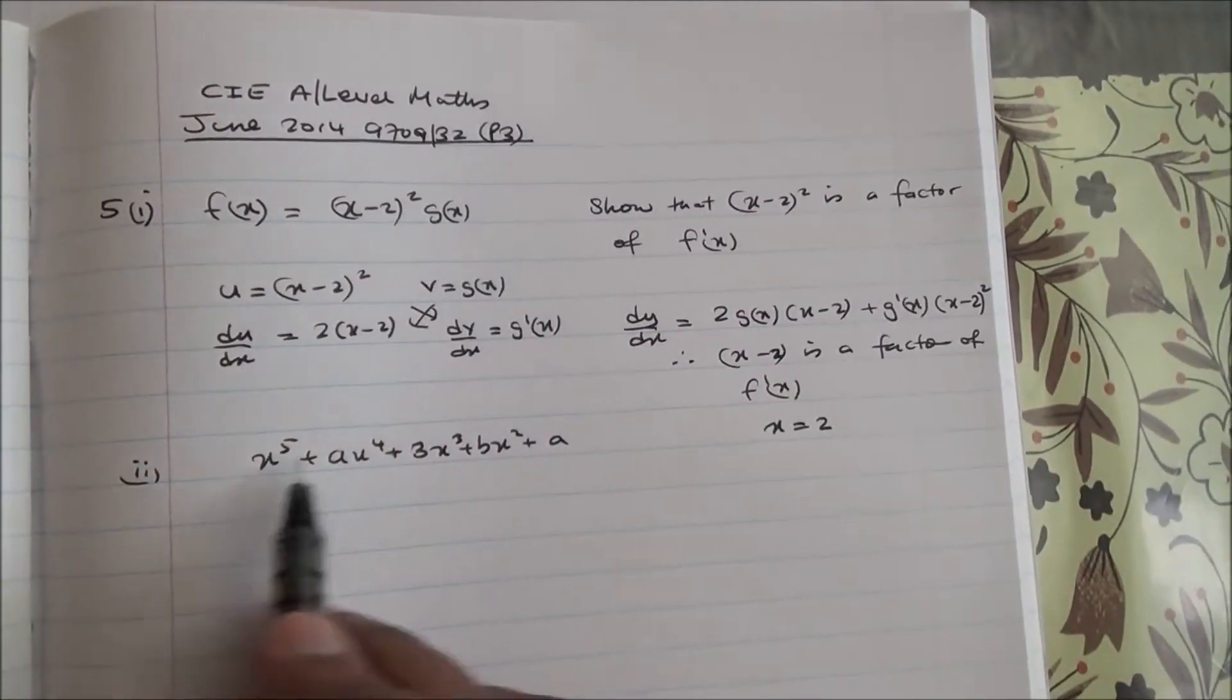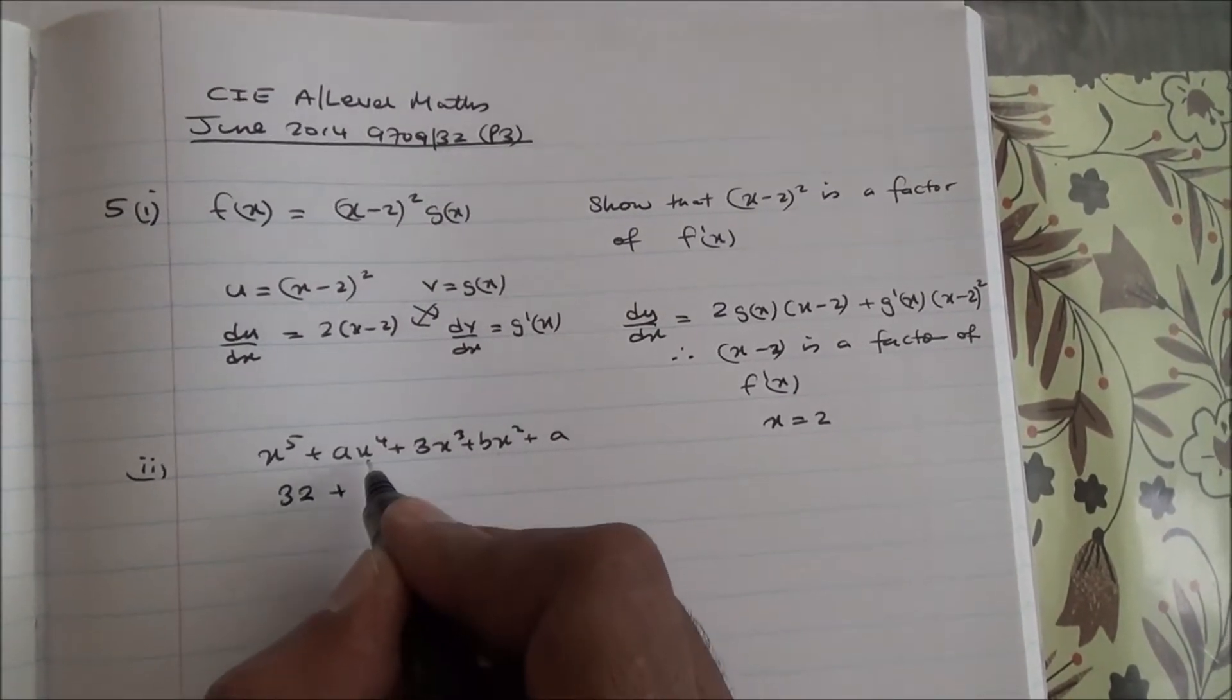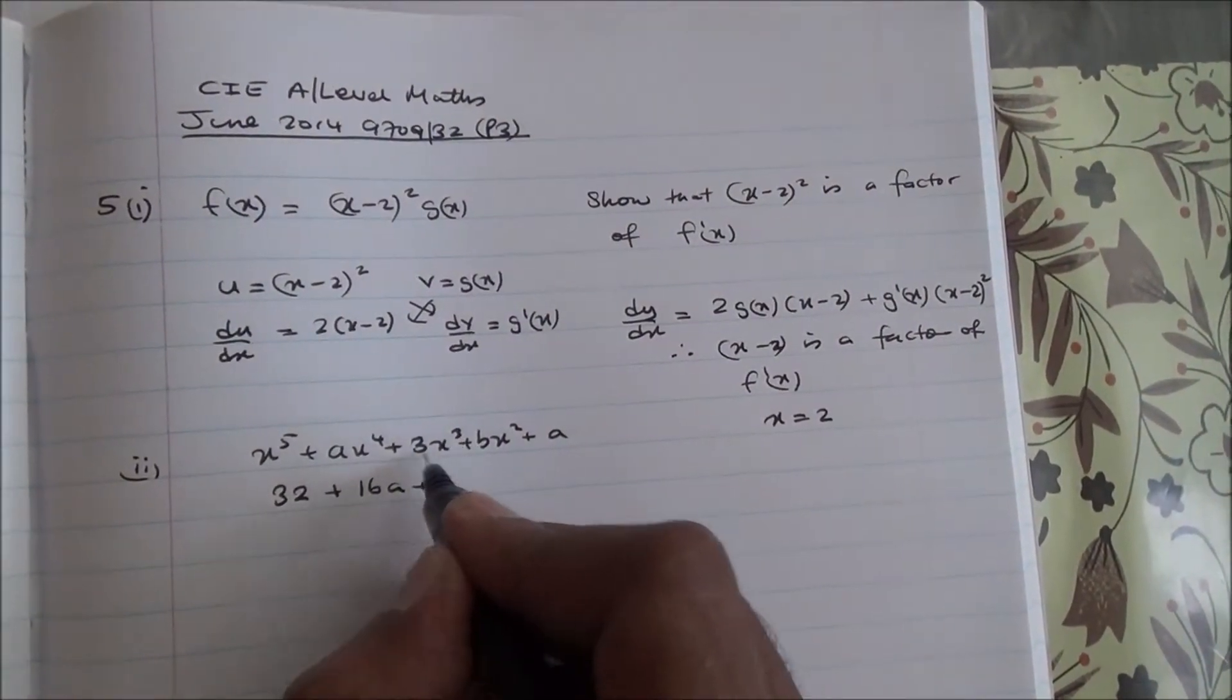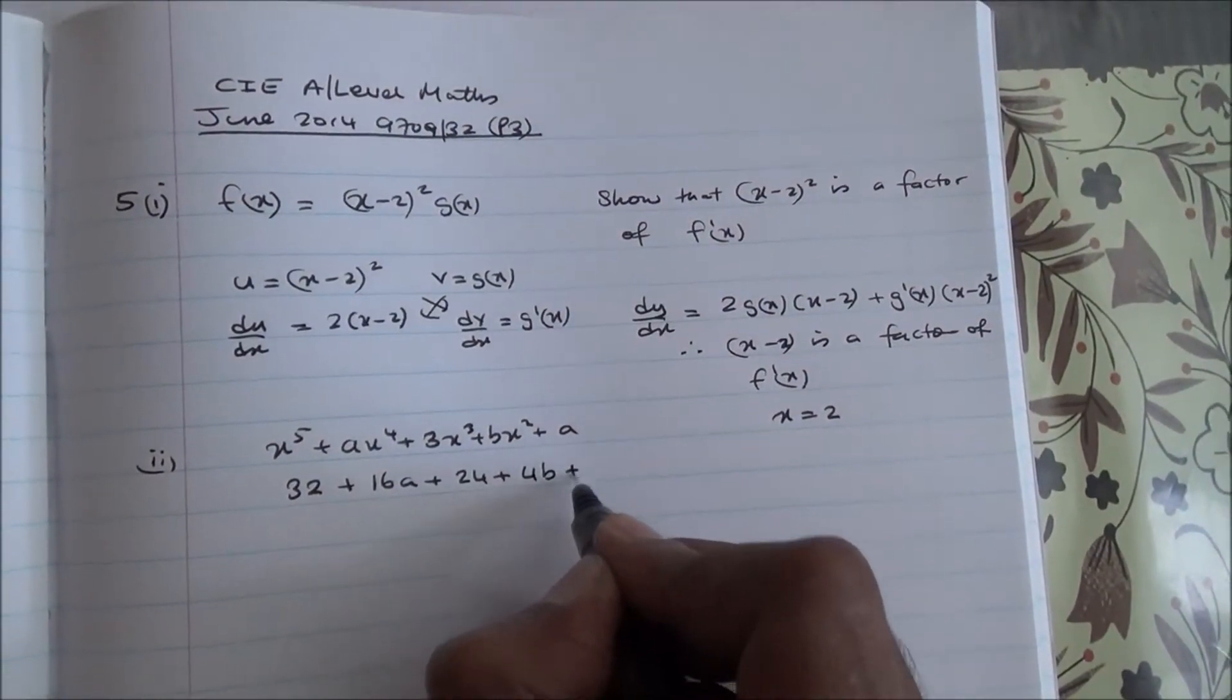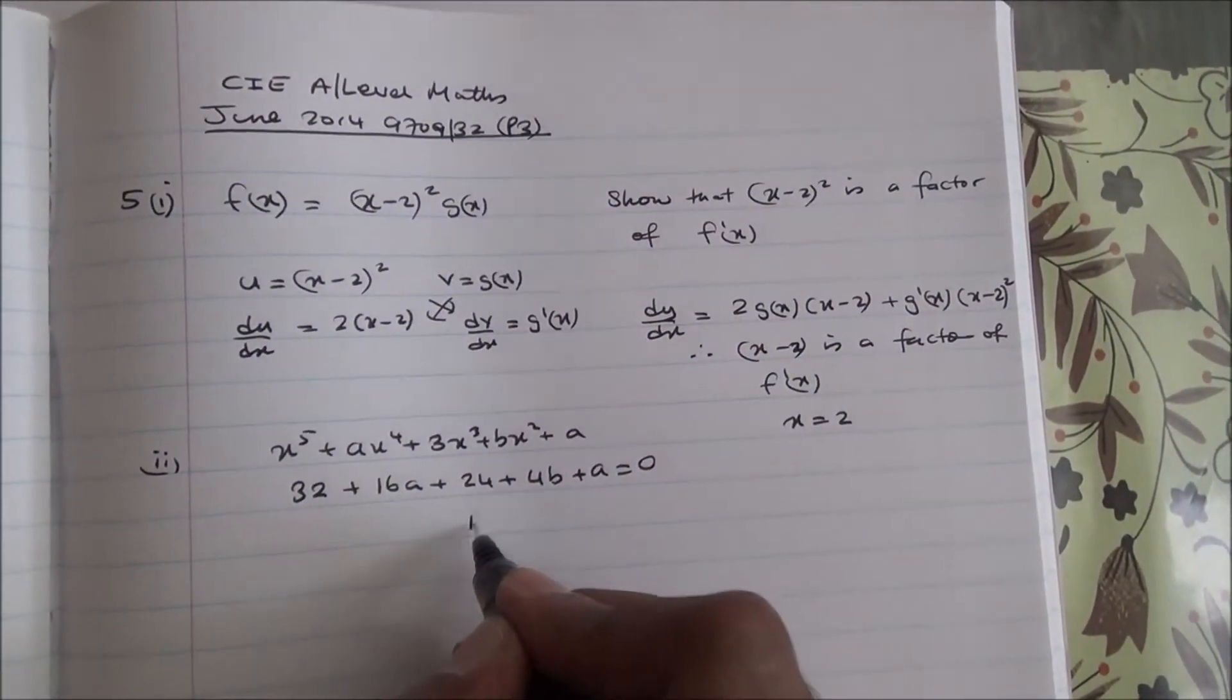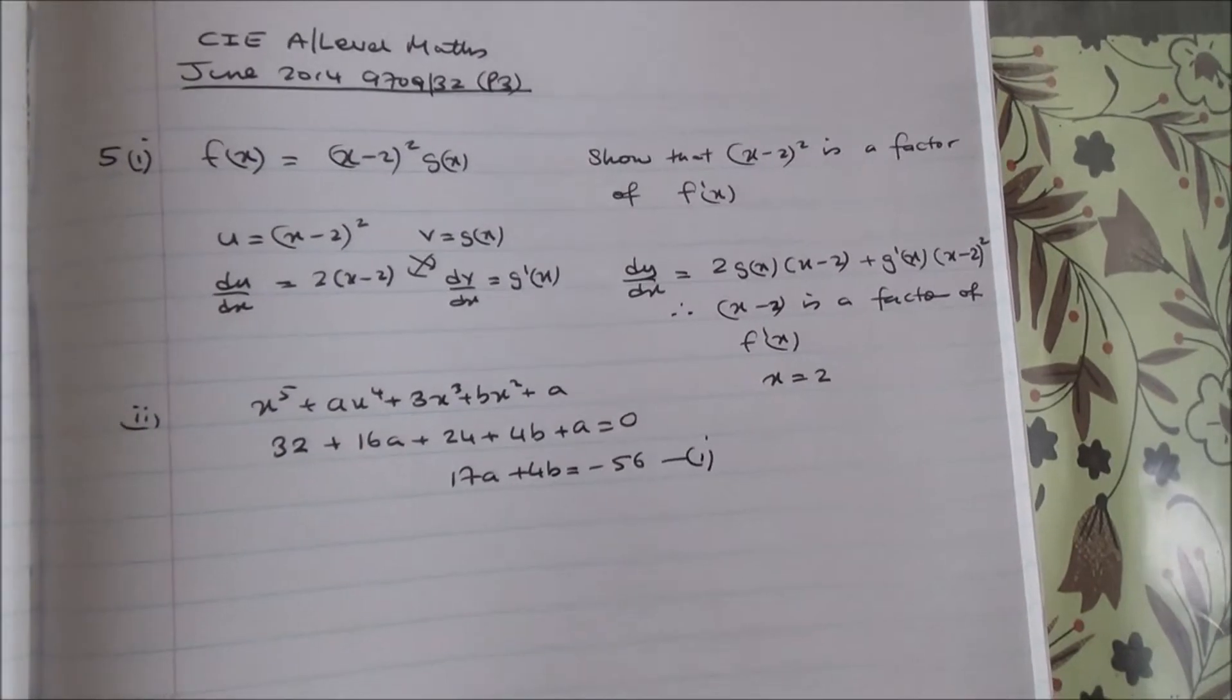Now, to substitute 2 in here, you're going to end up with 32 + 2⁴ is 16, so 16a + 8×3, 2³ is 8, 8×3 is 24, plus 4b + a = 0. So, 32 + 24 is 56, we've got 16a + a is 17a, plus 4b = -56, first equation.